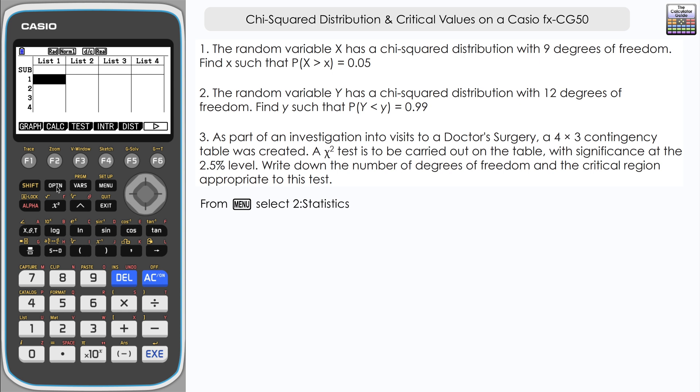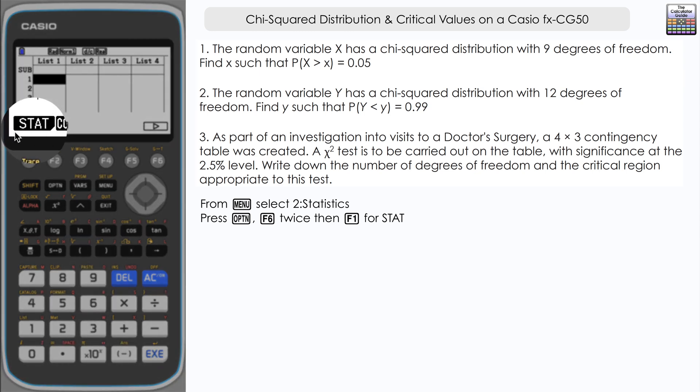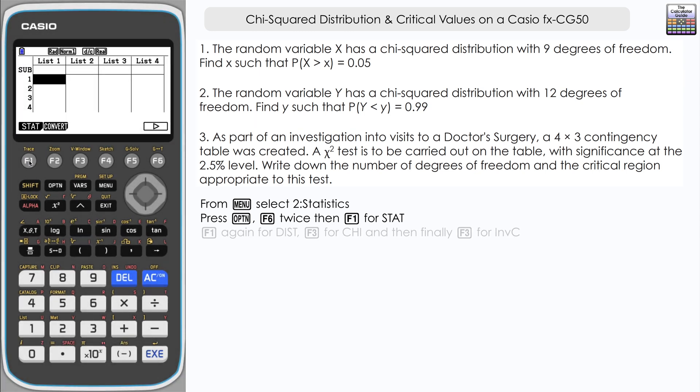To reference the values from the distribution, what we need to do from the opening screen here is to press option, and then we want to press F6 twice, so go right on the menu twice. Then you can see here we've got stat, F1, so press F1 and then F1 once more for distribution.